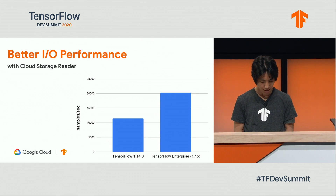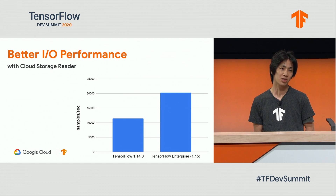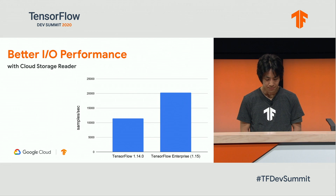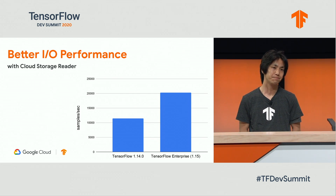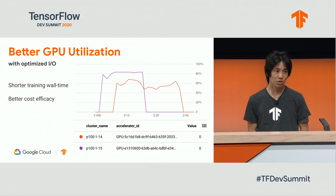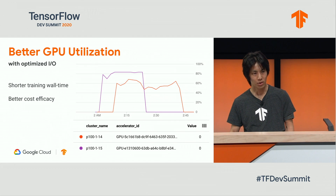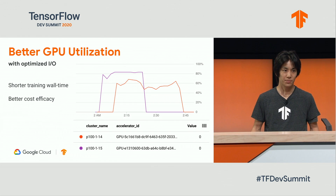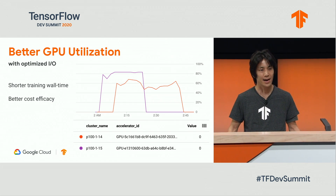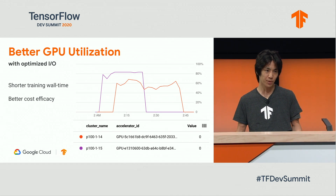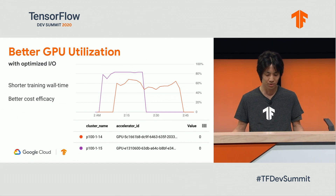This is a comparison of throughput when large data is read from Google Cloud Storage, with or without the optimization that TensorFlow Enterprise provides. As you can see, there is a nice throughput gain. The better IO throughput performance actually translates into better utilization of processors such as CPUs and GPUs, because IO is no longer the bottleneck of the entire training. What this means is your training finishes faster and your training wall time is shorter. As a result, your cost of training is actually cheaper, because compute cost is proportionate to the wall time you use the compute resources.